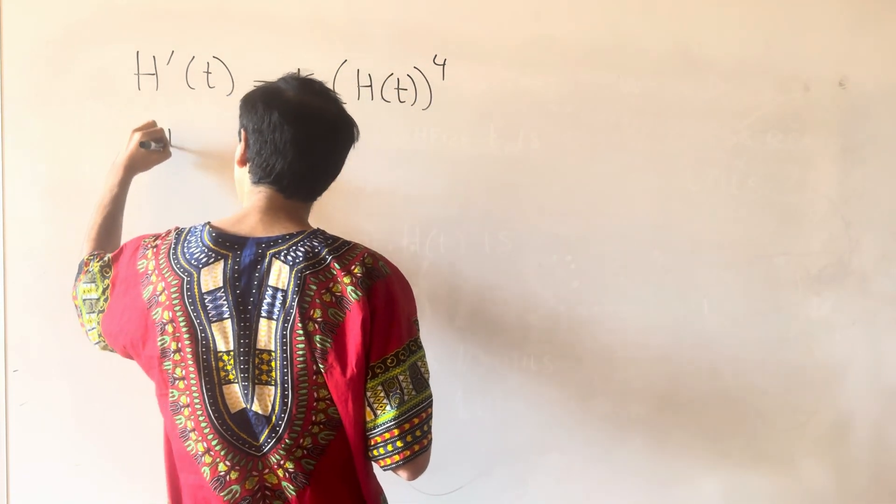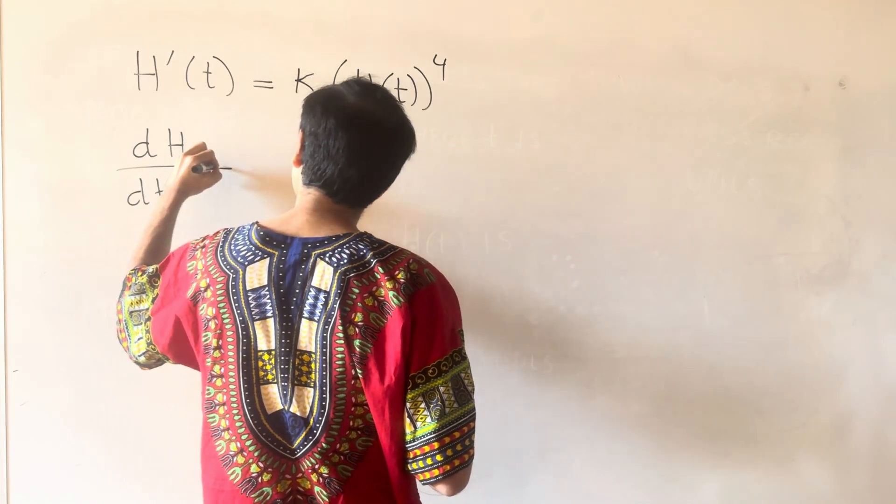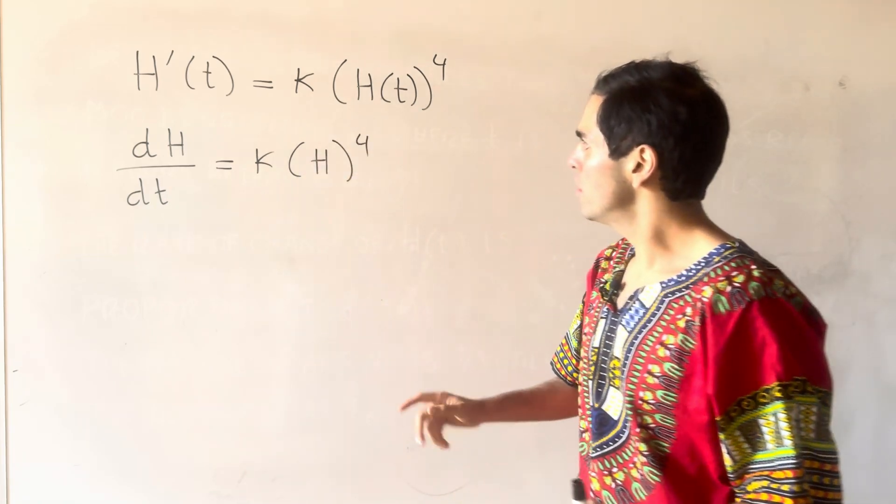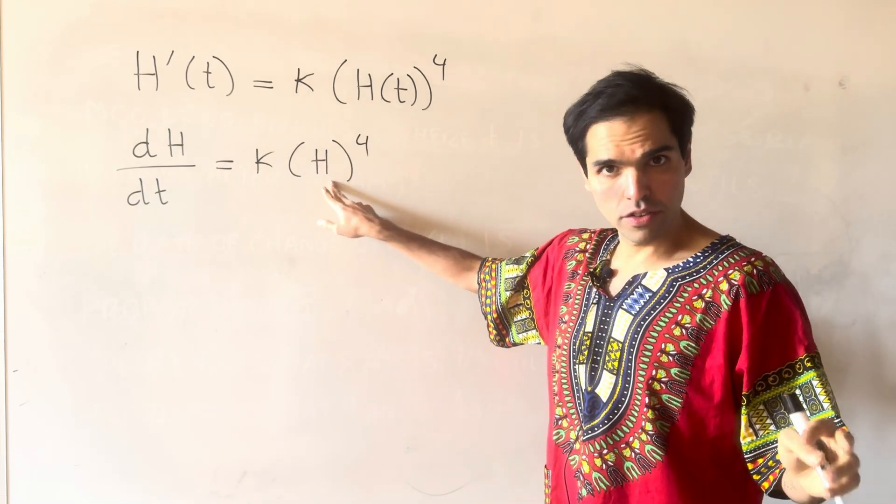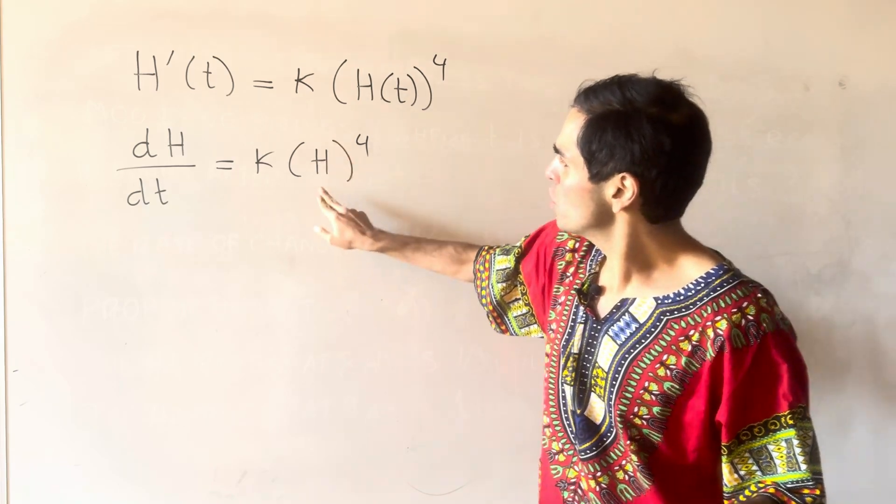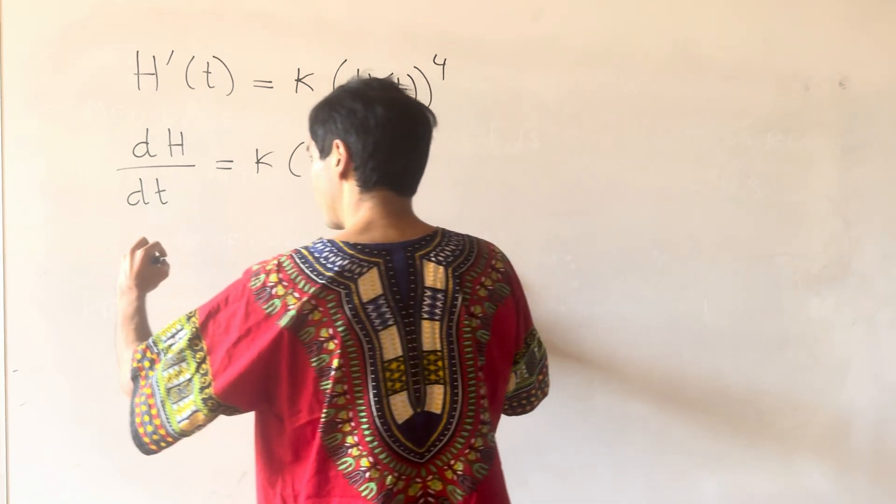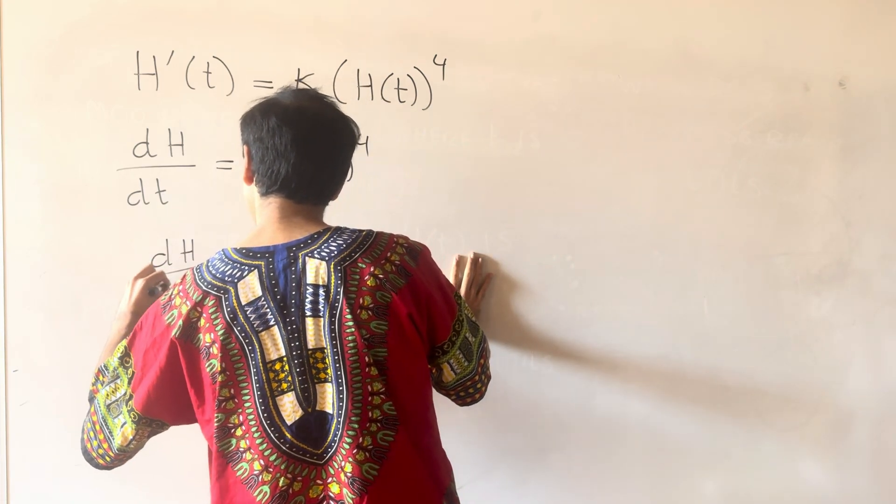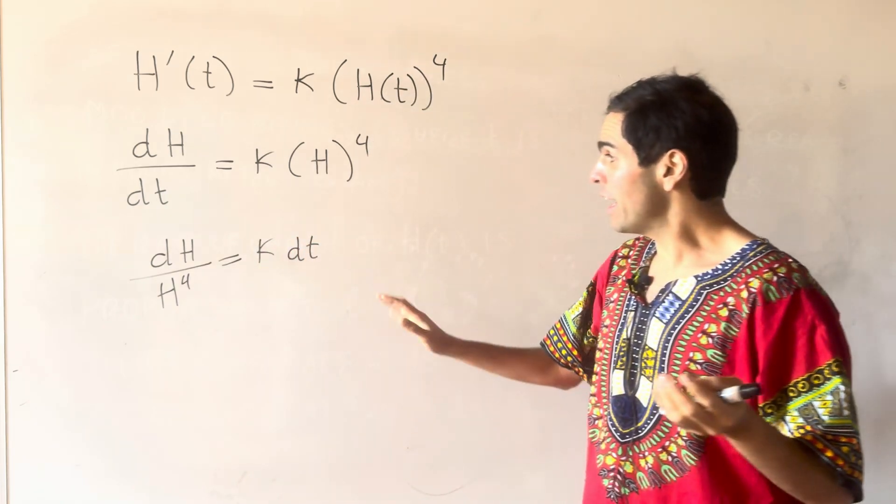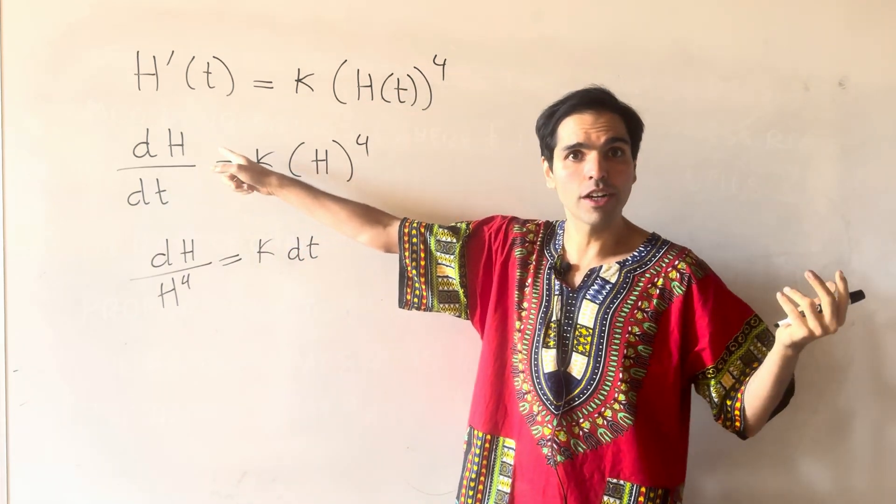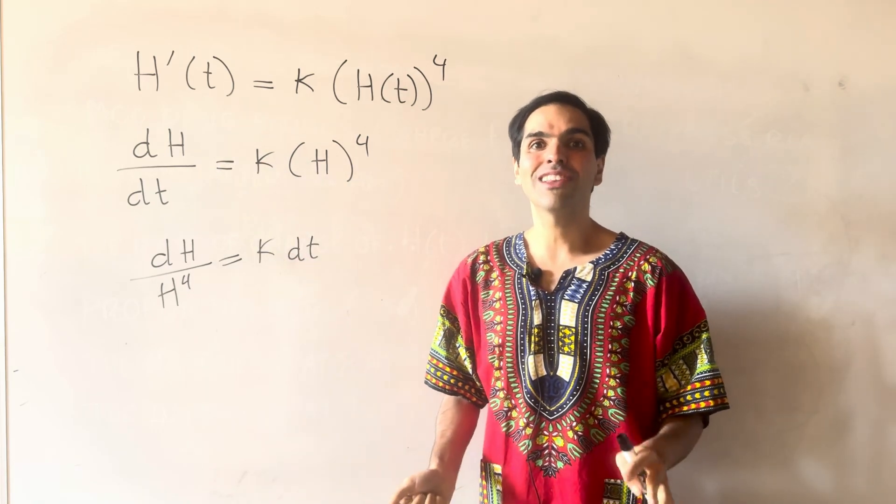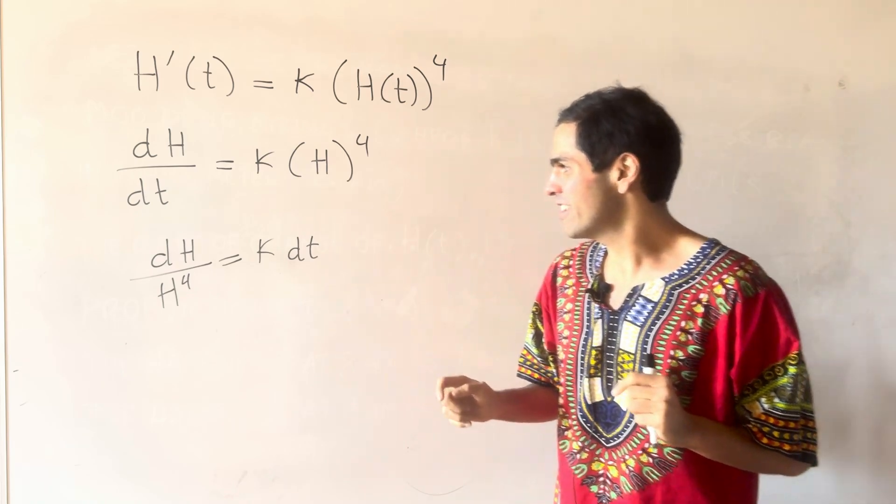So on the one hand, we have dH over dT equals K times H to the fourth power. Now, zero is not a solution because it doesn't satisfy H of one being one. So we can divide by H, and so we have dH over H to the fourth equals K dT. And by the way, of course, it's a bit non-rigorous to separate out the dH and dT, but there's another video that I did that makes it fully rigorous.